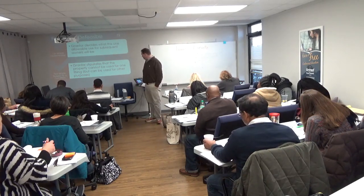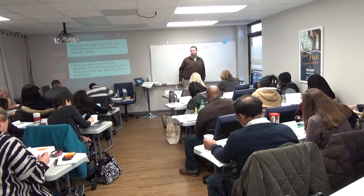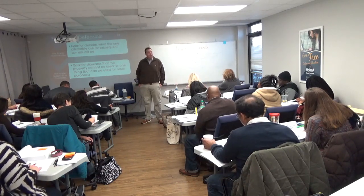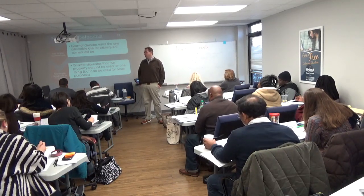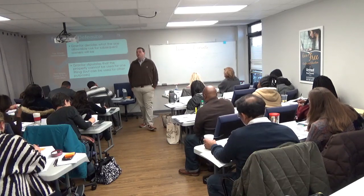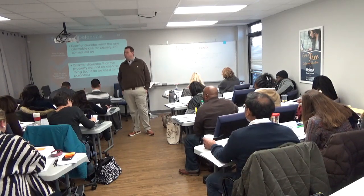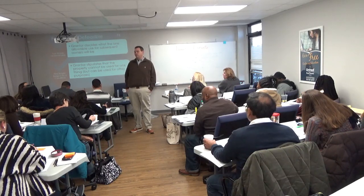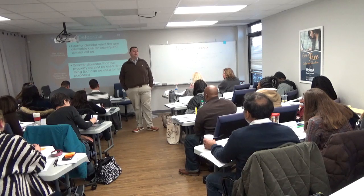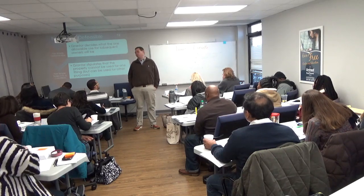The first type is called fee simple determinable ownership. The grantor decides what the one allowable use is for the property. For example: LaTosha, you own this property so long as you only use it as a park. How many things can LaTosha do with that property? Just the one. Can she sell it? Yes — but the new owner can only use it as a park. And how long is that restriction going to be in place? Forever.